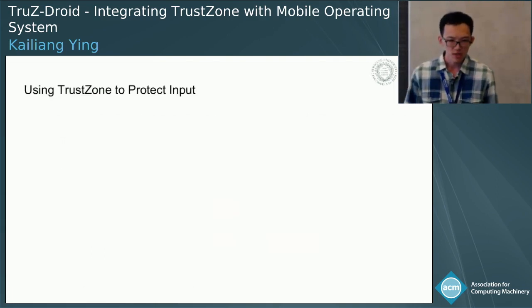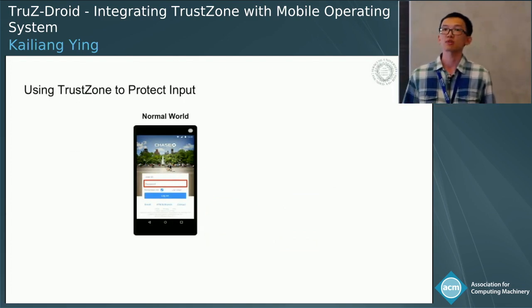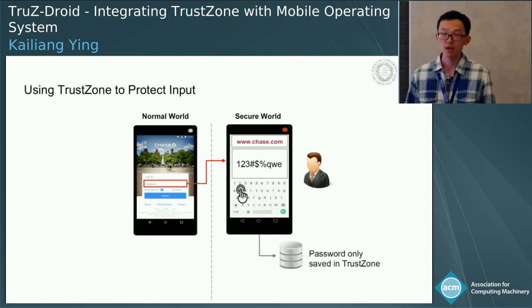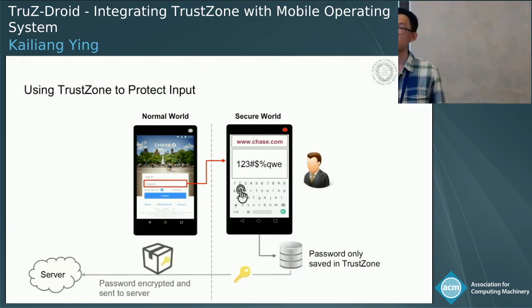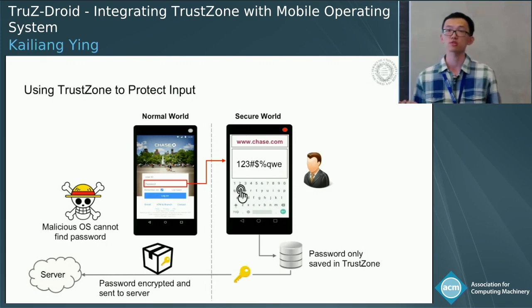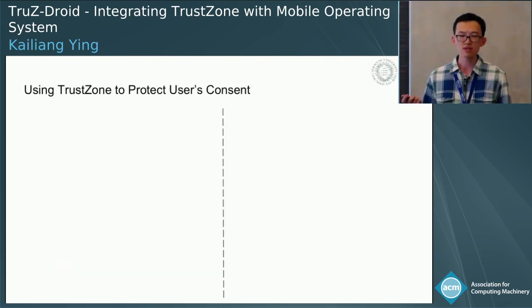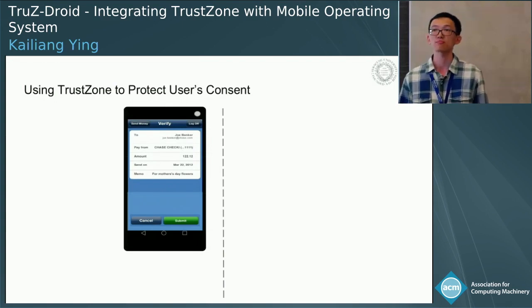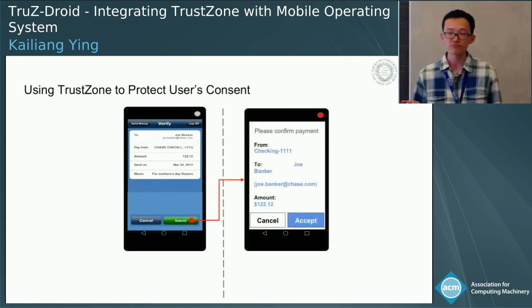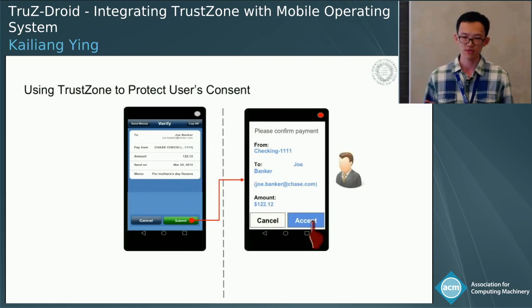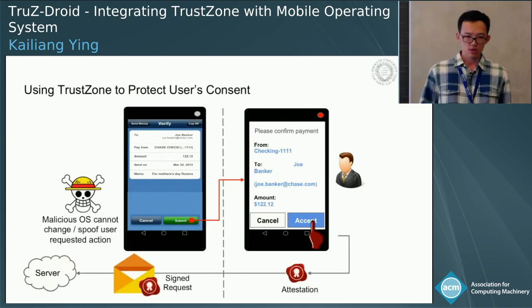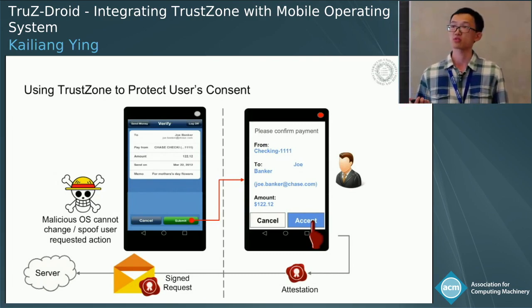Let's look at examples of what benefit it can bring if every app can use TrustZone. For login, apps could embed a special text field to take input in TrustZone, the user inputs their password inside TrustZone, the password is saved inside, and when sent to the server it is encrypted inside TrustZone — so the normal world will not be able to know what's sent. For money transfer, users do most activities in the normal world, but right before sending money they confirm inside TrustZone with all confirmations shown there. An attestation is generated and sent along with the normal request to the server, so a malicious OS cannot change the request or spoof actions on behalf of the user.